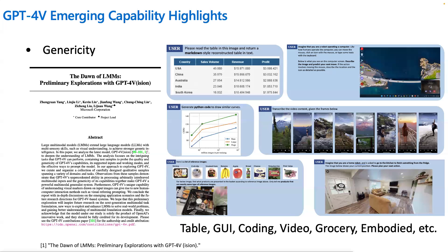Another emerging capability is coding with vision. GPT-4V can generate Python code to reproduce a given line chart. We also found that GUI navigation is very interesting — GPT-4V can interact with and navigate through graphical user interfaces of a computer or smartphone. We explored its potential to complete complex tasks such as web browsing, online shopping, and responding to notifications, including handling incoming calls and message notifications on a computer screen effectively.